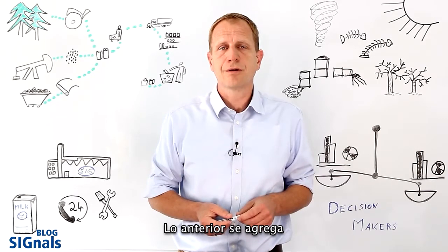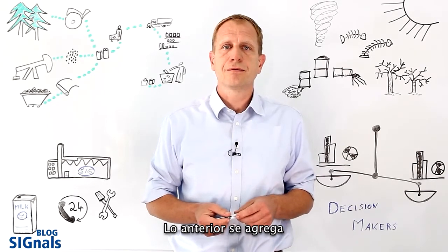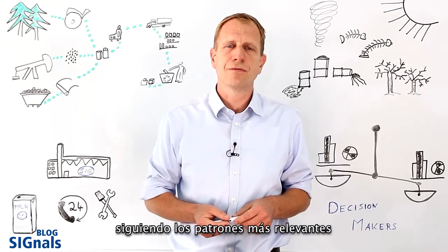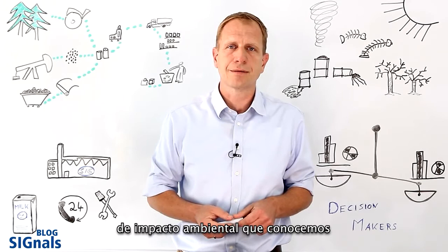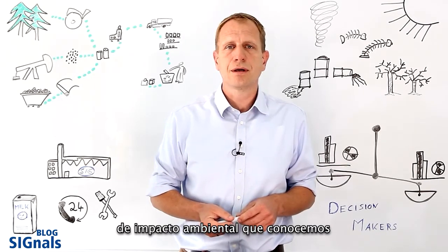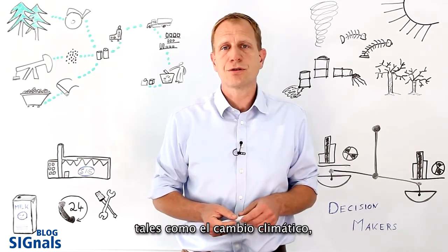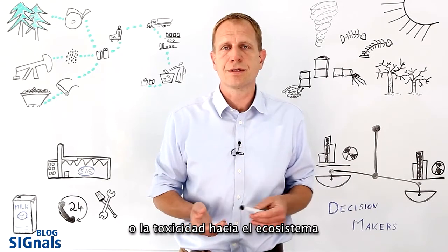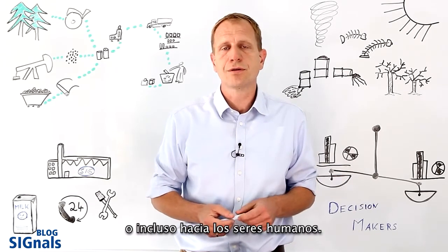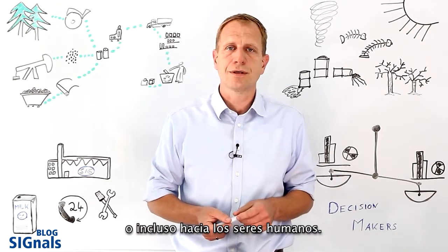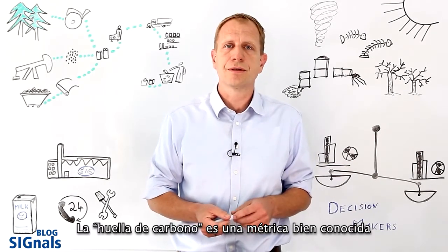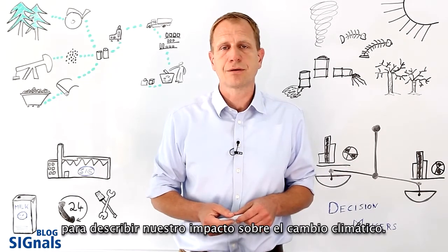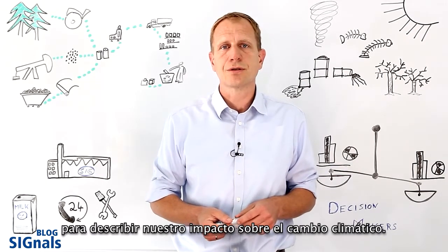These are aggregated following the most relevant environmental impact patterns that we know, like climate change, resource depletion, ecotoxicity, or even human toxicity. A carbon footprint is a well-known metric to describe our impact on climate change.